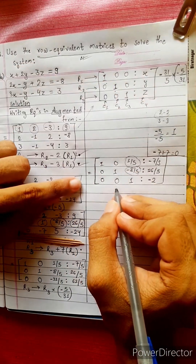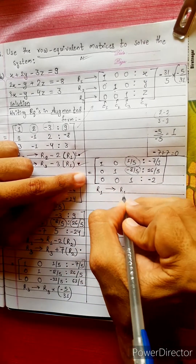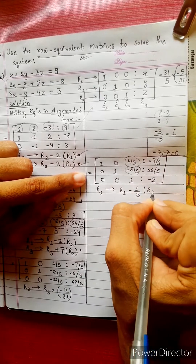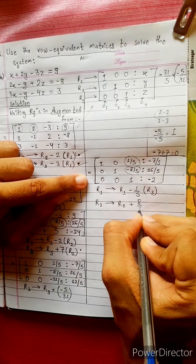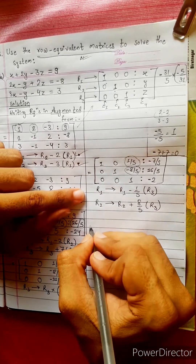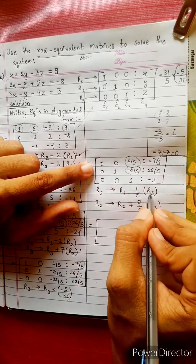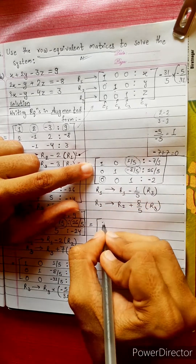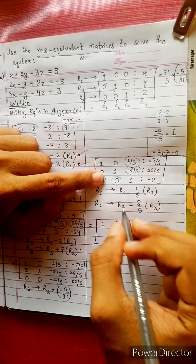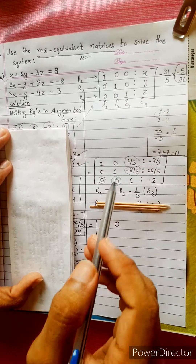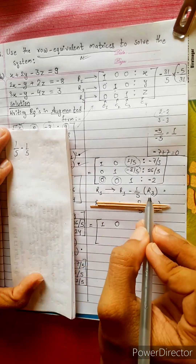R1 changes into R1 minus 1 by 5 times R3. R2 changes into R2 plus 8 by 5 times R3. This is the answer to R3. 1 by 5 times R3. R3 equals 0. 1 minus 0 equals 1. 0 minus 1 by 5 times R3 equals 0. 0 minus 0 equals 0. R1 equals 1 by 5. 1 by 5 minus formula. Minus 1 by 5 times R3. R3 equals 1.